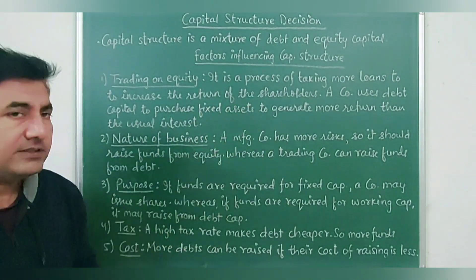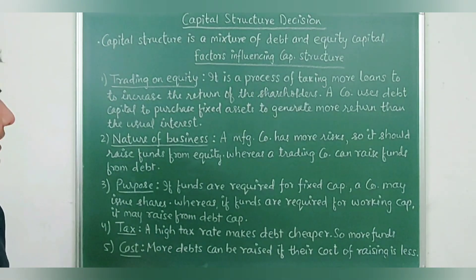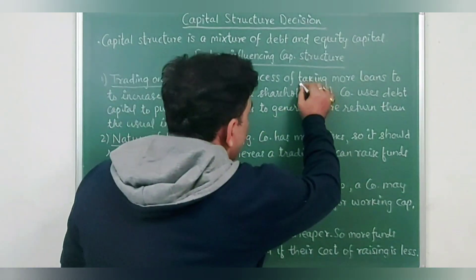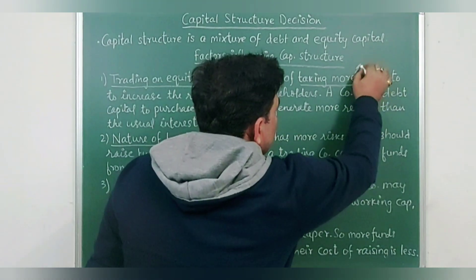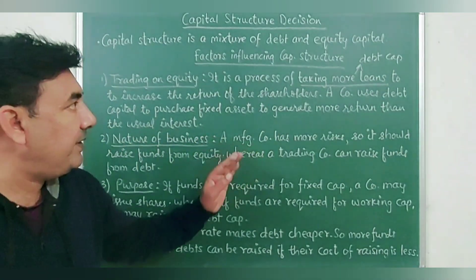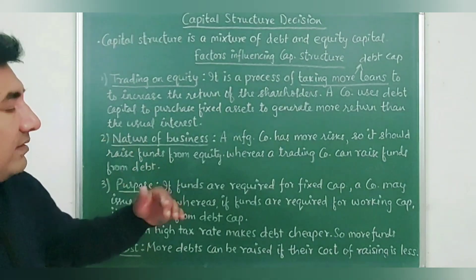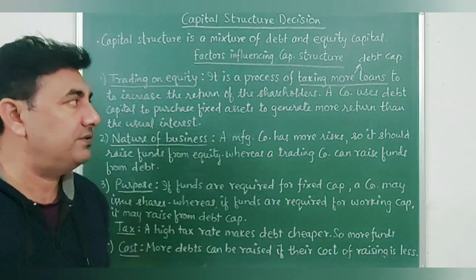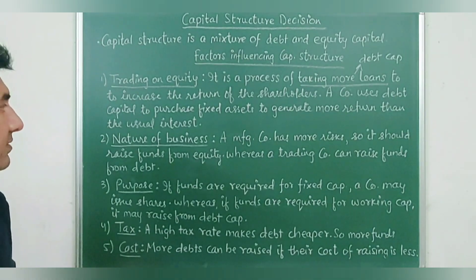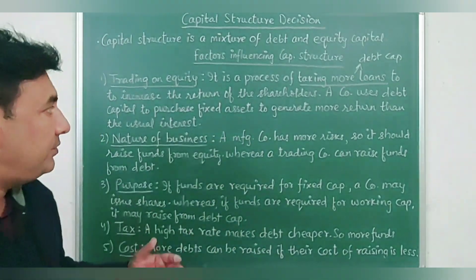What is trading on equity? It is a process of taking more loans to increase the return of the shareholders. Here, loans refer to debt capital. The company takes more funds by issuing debentures and bonds so that they can pay a good return to the shareholders. A company uses debt capital to purchase fixed assets to generate more returns than the usual rate of interest.